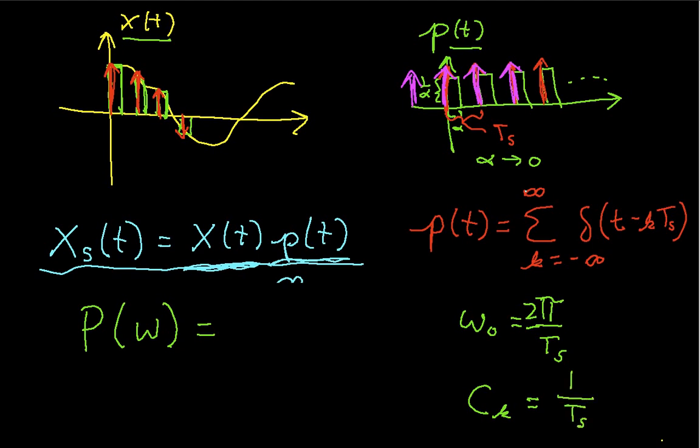And you get that, I won't actually do this, but you get that by plugging this expression, actually one delta function of this expression, because you're integrating over one period into the integral expression for the Fourier series. And then you integrate over one period. And because you're integrating a delta function, it turns out that the area of that delta function is 1.